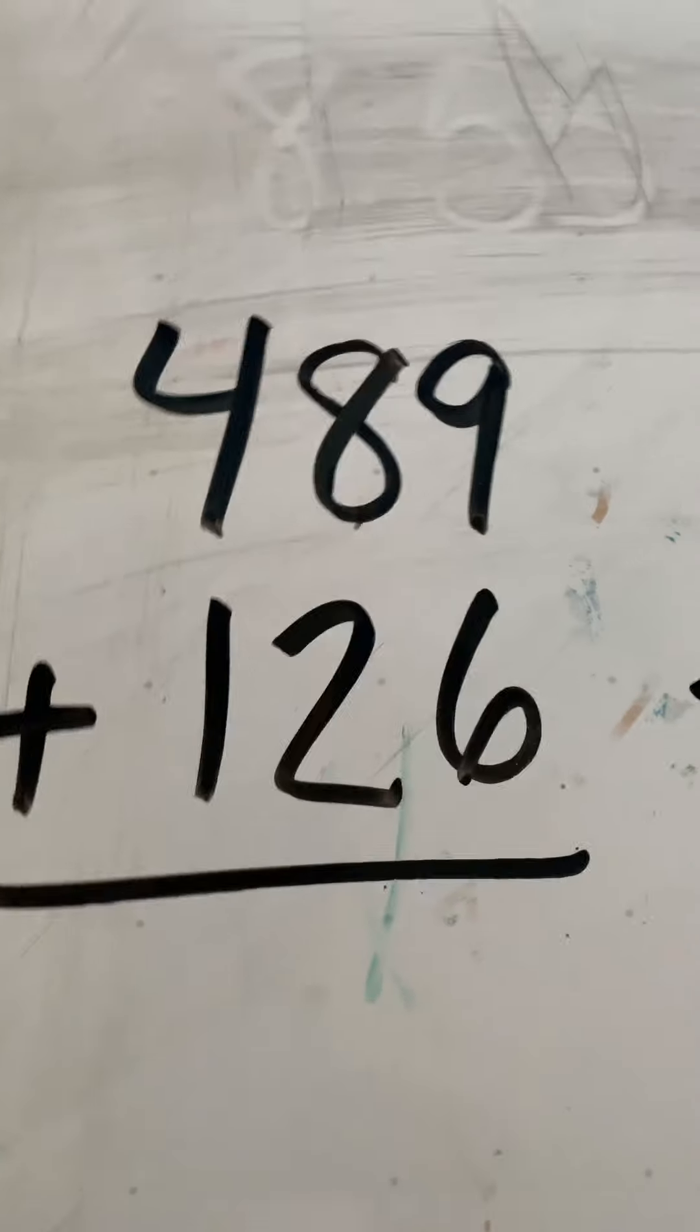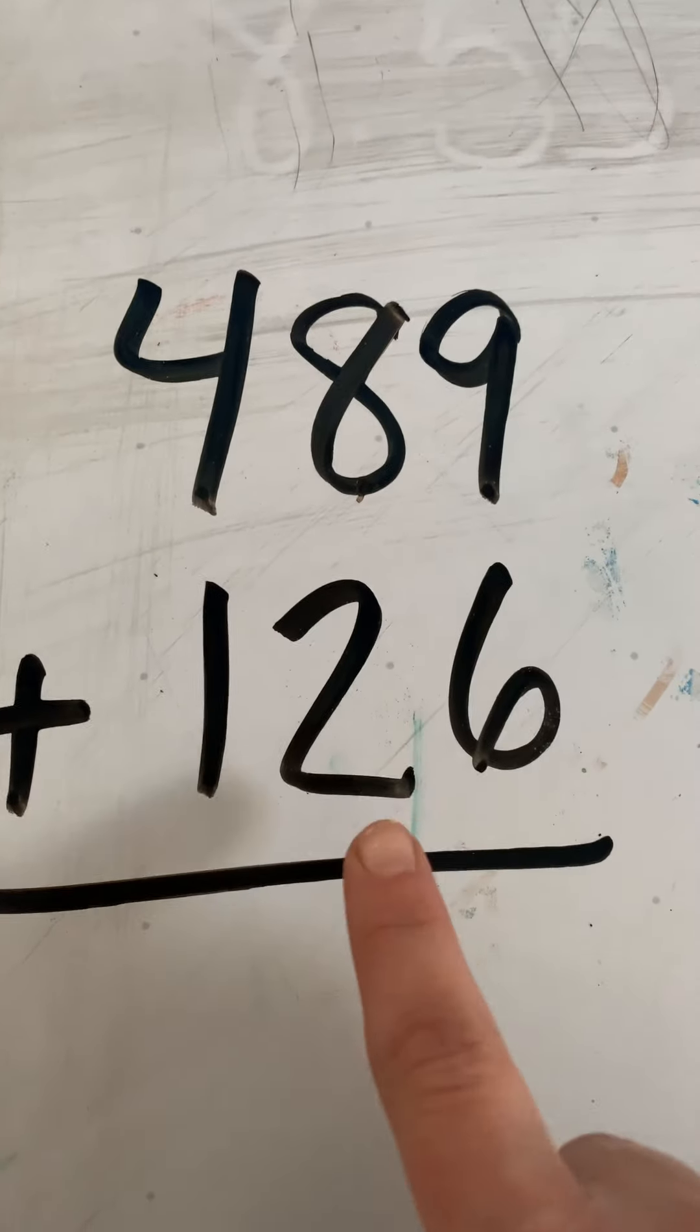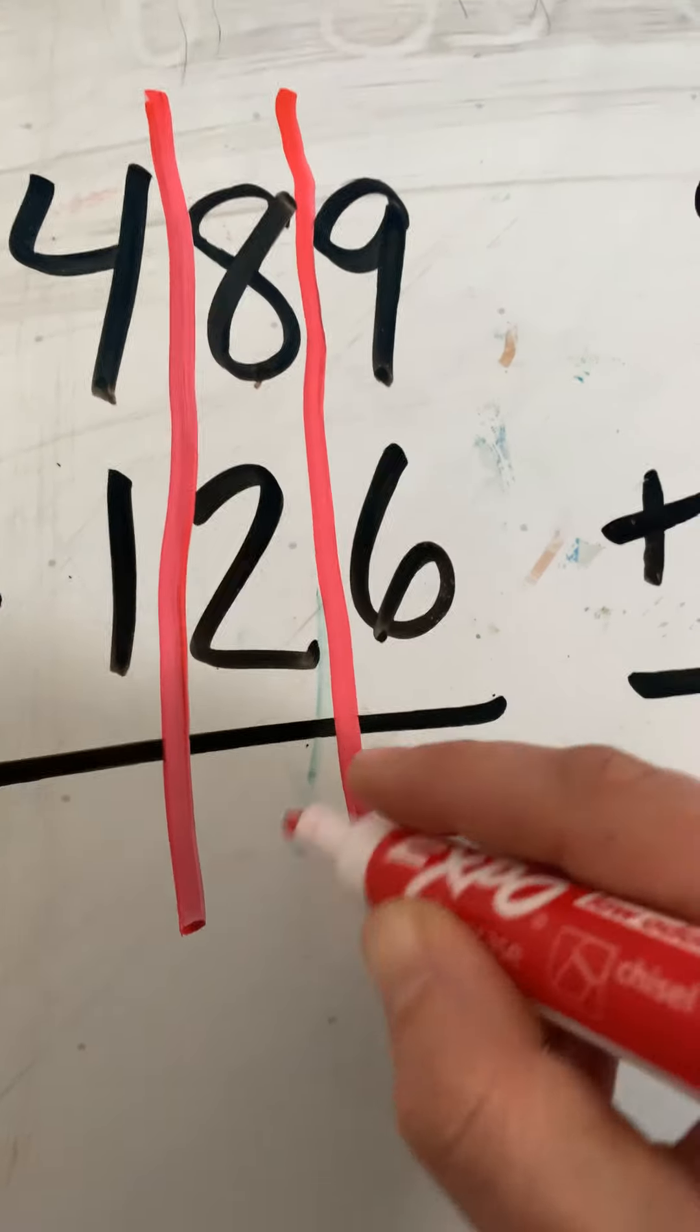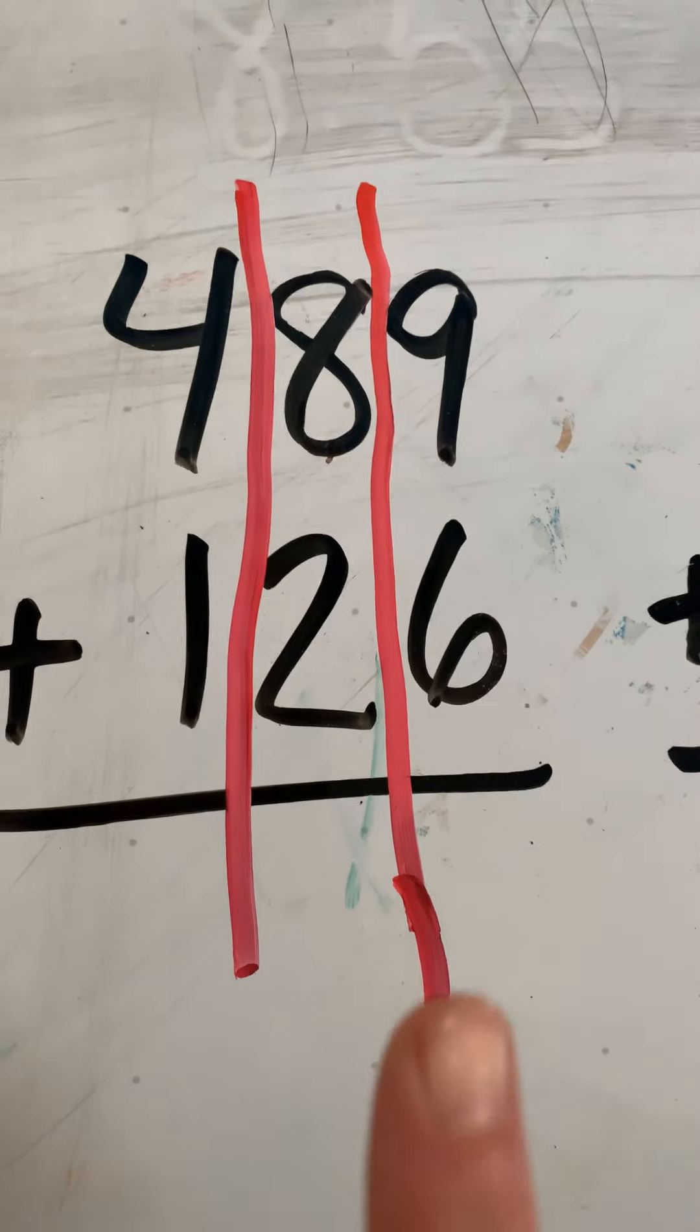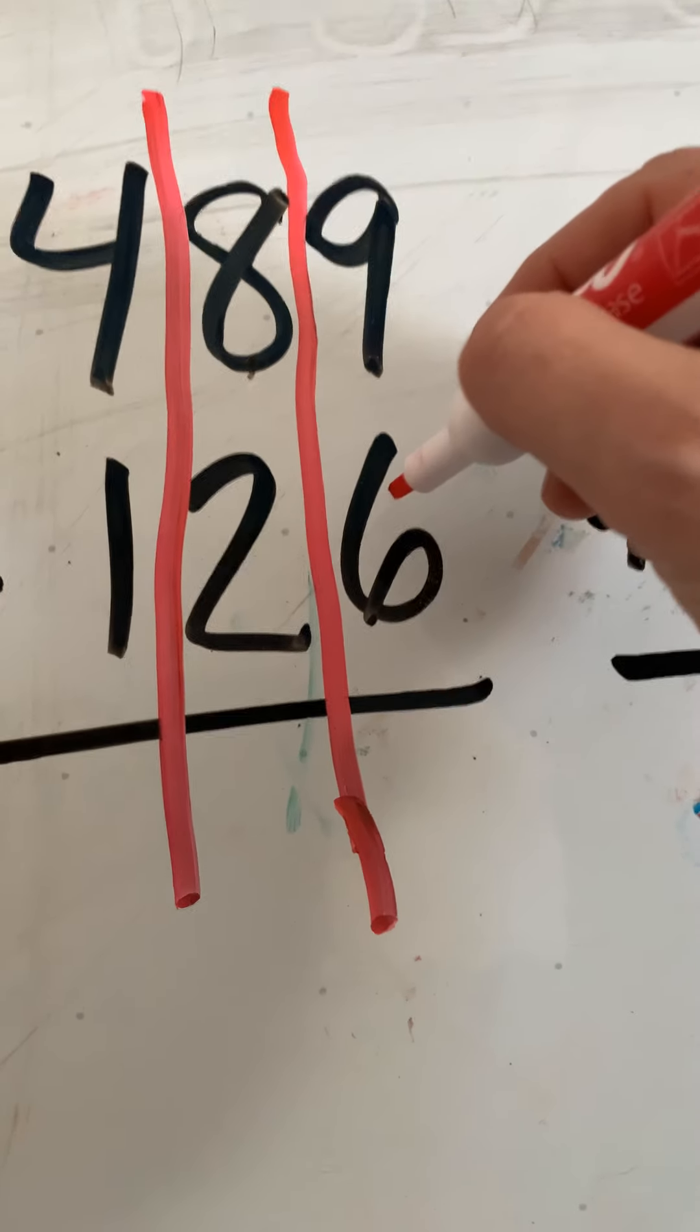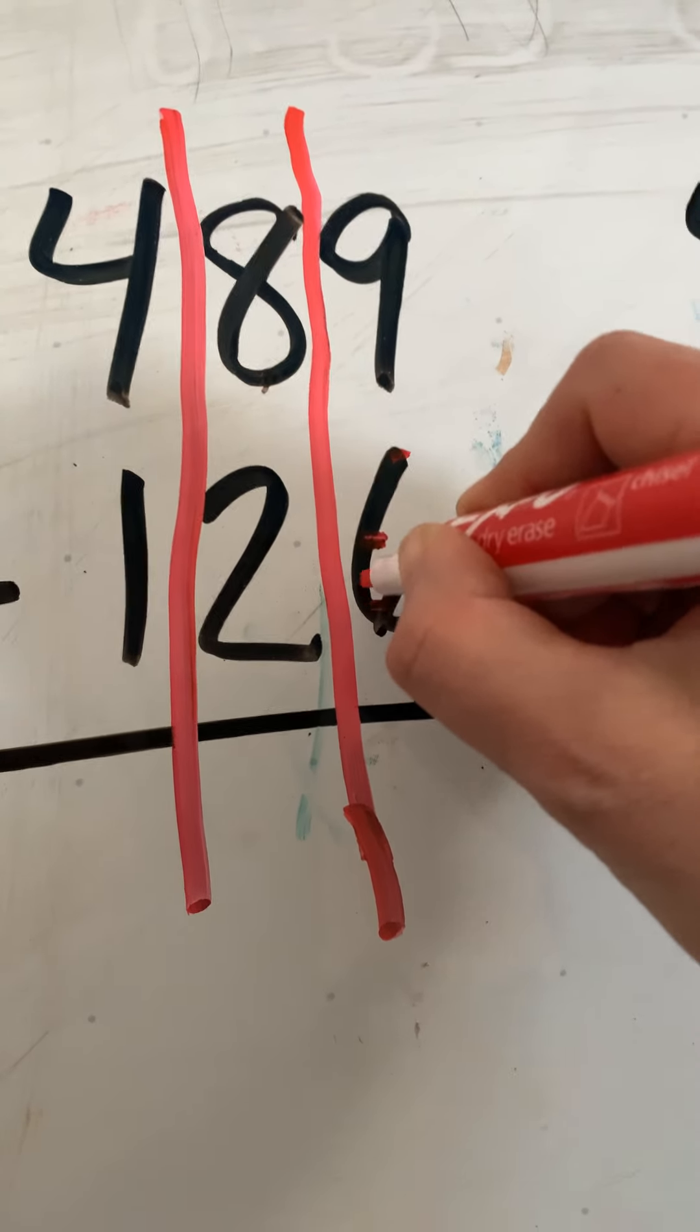Let's do two more together today. So our problem says 489 plus 126. This one I'm going to show by drawing the lines down. Again, that's totally optional. You don't have to do it. And what side do I start on? Right is always right. It's the number one spot. So this is a big one. So let's do 9 plus 6. Ready? 9, 10, 11, 12, 13, 14, 15.